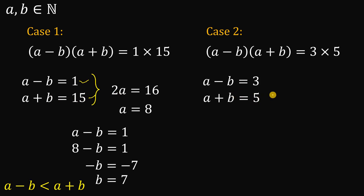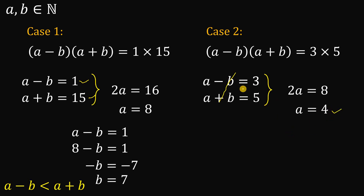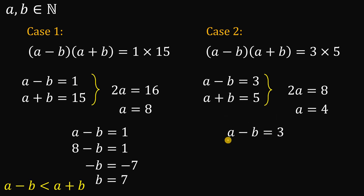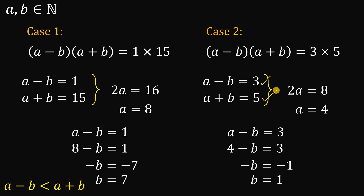For Case 2, adding the equations a minus b equals 3 and a plus b equals 5, the b terms cancel, giving 2a equals 8, so a equals 4. Substituting back into a minus b equals 3: 4 minus b equals 3, so b equals 1. Check: 4 minus 1 equals 3 ✓, and 4 plus 1 equals 5 ✓.